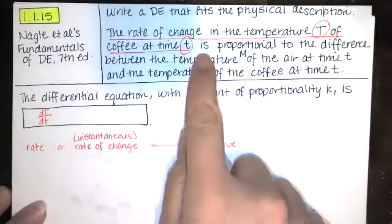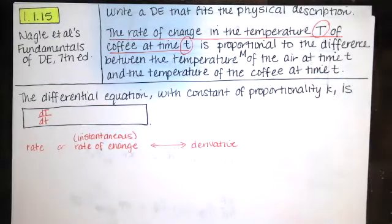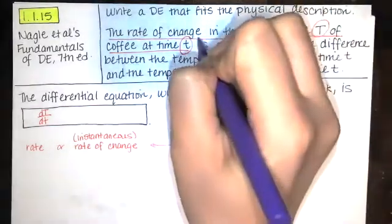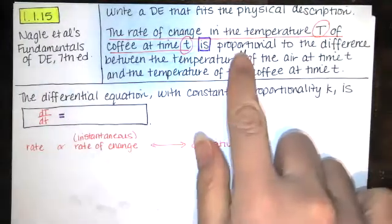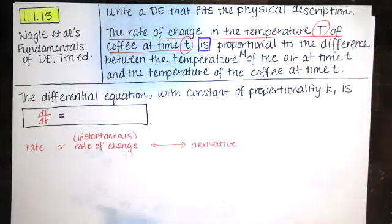Then when you see is, that's an equal sign. And then it says it's proportional to the difference between the temperature M of the air at time t and the temperature of the coffee at time t.